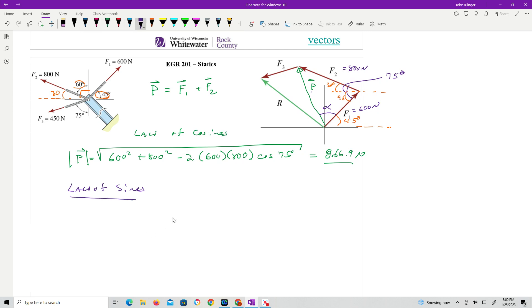All right, law of sines, like I said, we're looking for alpha. Sine of alpha over 800 newtons, right, is equal to the sine of 75 over 866.9 newtons. Work that out. So alpha will equal, let's make sure, 63 degrees. Okay.